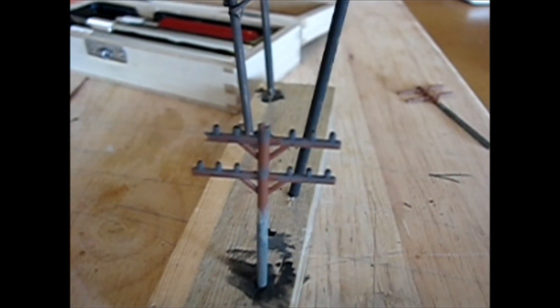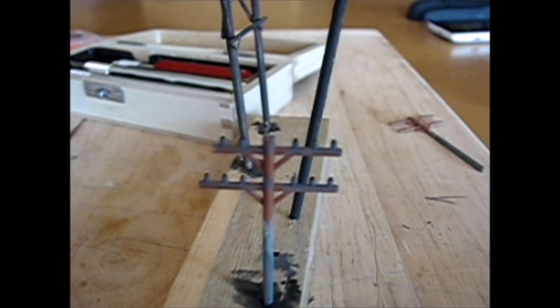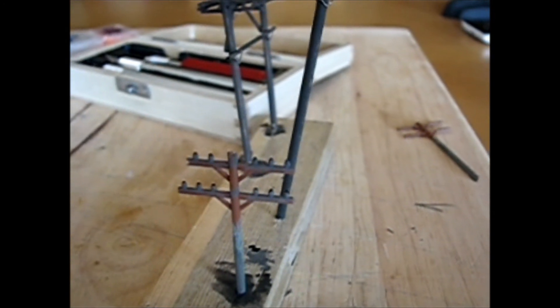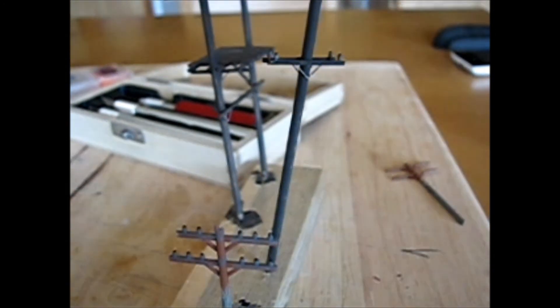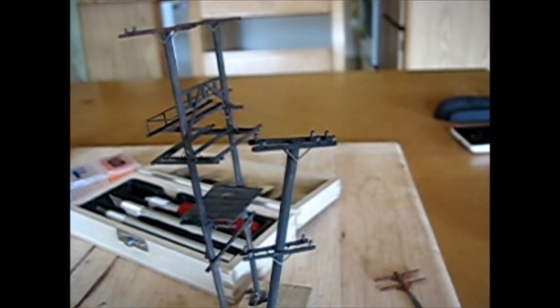So as a finishing touch, what I did was I painted the insulators on the Bachmann power poles that I had. And then what I do is once those are dry, I'll trim those off and glue them on to my own poles here.